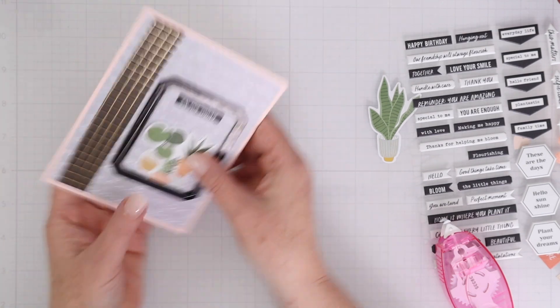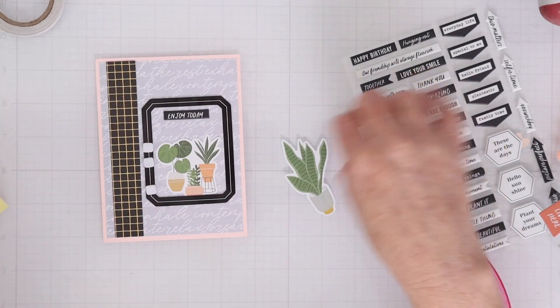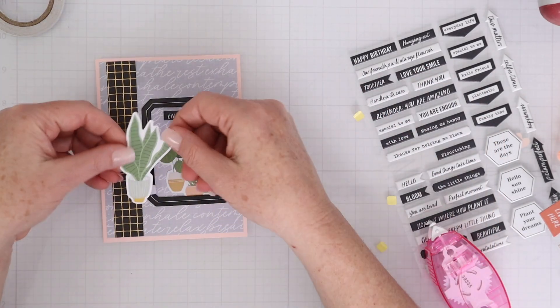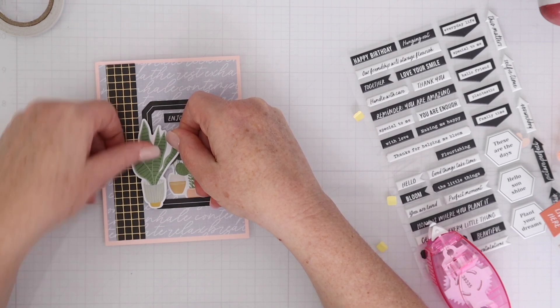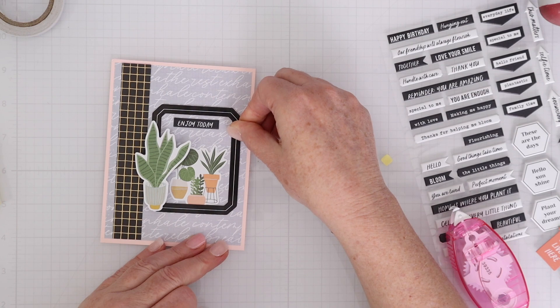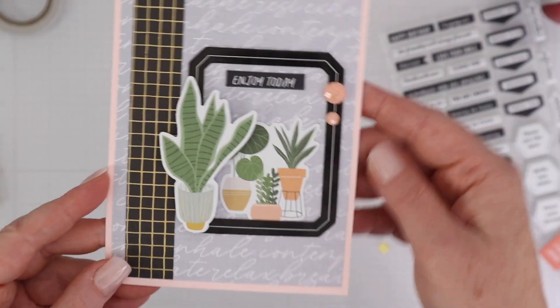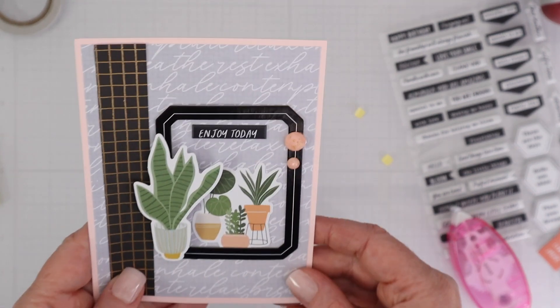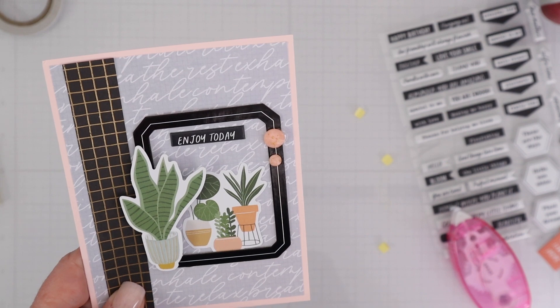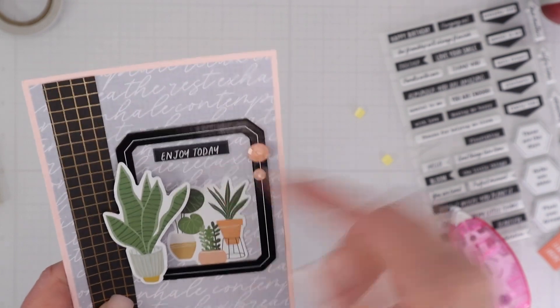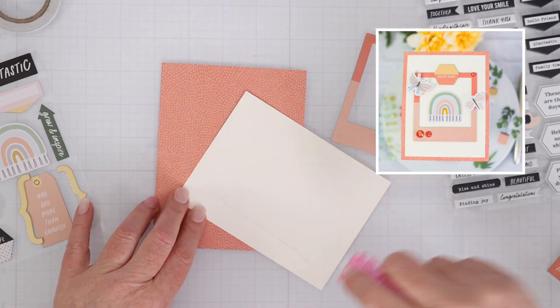And then I'm going to use some of those die cuts. And I'm going to use a few of the dimensional adhesive to pop up one of the plants because I wanted to use more than one, but I didn't have room inside the frame. So I popped it up on the outside of the frame and then a couple of those dots. So this is a really easy card to put together. And I've used a lot of different elements from the kit. Cardstock, pattern paper, die cuts, gems, puffy stickers, frames. I love that everything coordinates together, makes it really easy.